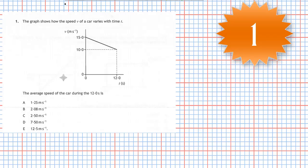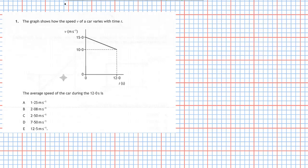Question one from section one of the 2019 Higher Physics examination. The graph shows how the speed v of a car varies with time t. The average speed of the car during the 12 seconds is given from the following five responses. Let's see how we work out the average speed from a speed-time graph.